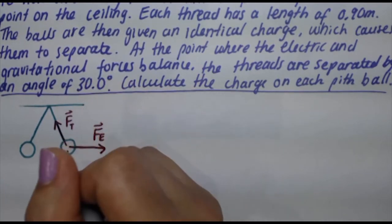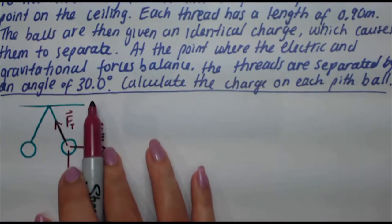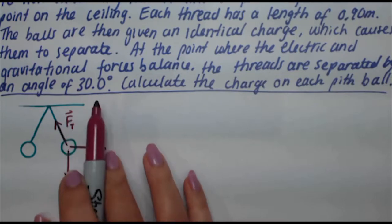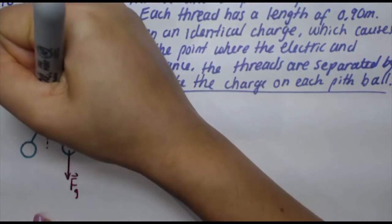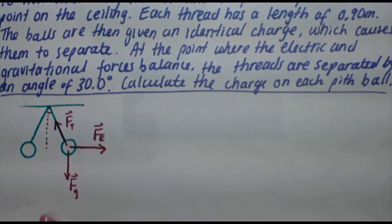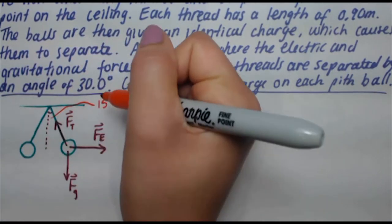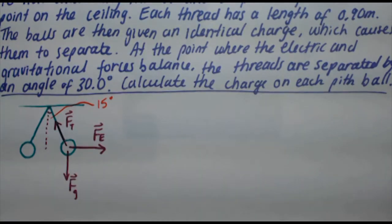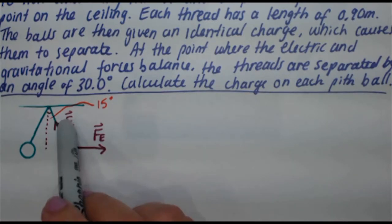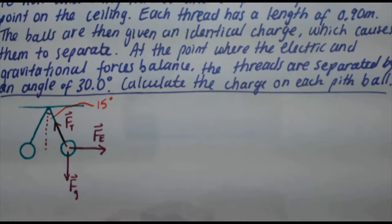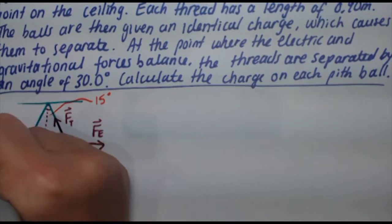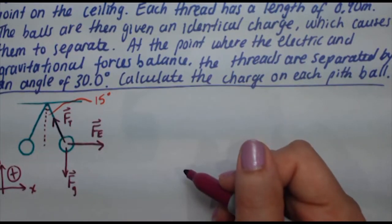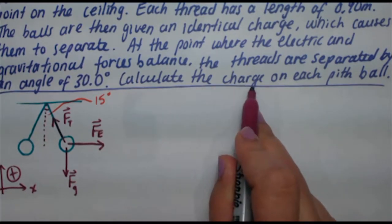We're also told that once they separate and at the point where the gravitational and electric forces balance, the angle between the two is 30 degrees. Now this whole angle there is 30 degrees. Therefore, if I cut this in half, half of 30 is 15. So this angle in here is going to be 15 degrees. Make sure you keep track of that because your answer will come out very close if you plug in 30 instead. Because the forces are balanced, that means the net force in the y and the x direction are zero. Let's establish our coordinate system now. Let's let positive x be to the right and positive y be up.